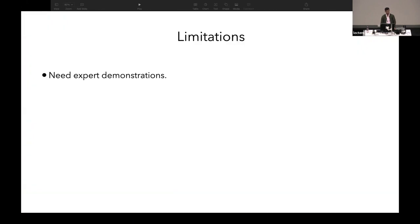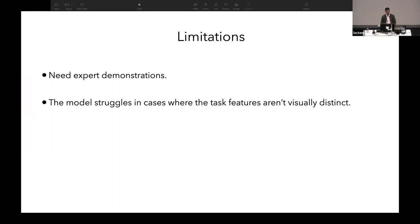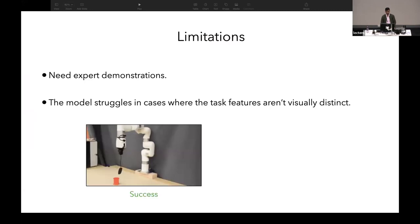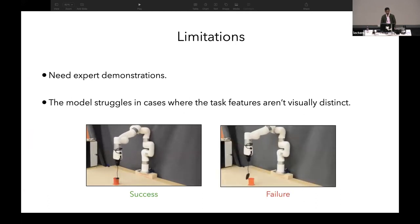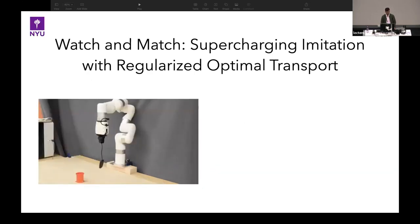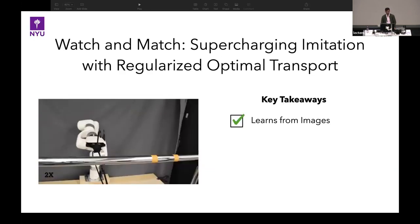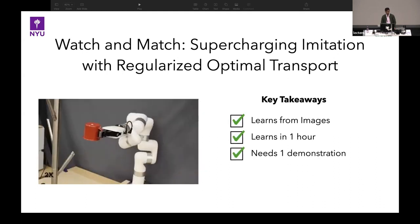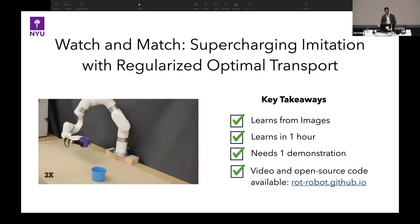We also evaluate on a suite of 14 real-world tasks. For all tasks, high-dimensional RGB images are given as input and the policy outputs end effector positions. For each task, we provide a single expert demonstration and limit online training to just one hour. ROT significantly outperforms behavior cloning and prior adversarial IRL-based approaches. One limitation is that we need expert demonstrations as the only task signal, and suboptimal demonstrations lead to suboptimal actions. Another limitation is the model struggles when task features aren't visually distinct — for example, placing a peg in a cup, where the peg behind the cup looks visually very similar to being inside it. However, we do not use any pre-training schemes for representation learning, and using them should help alleviate these problems. Key takeaways: we learn from high-dimensional images, with a single hour of online training and just a single expert demonstration.